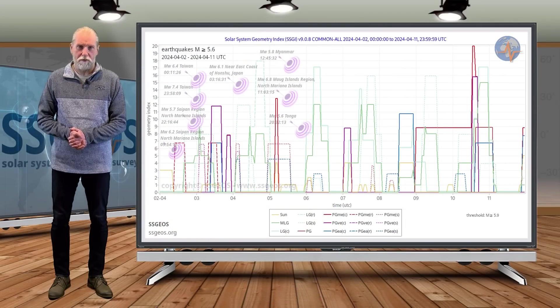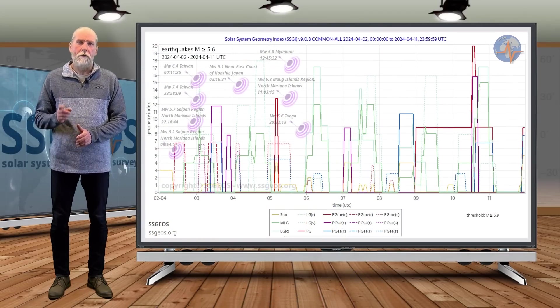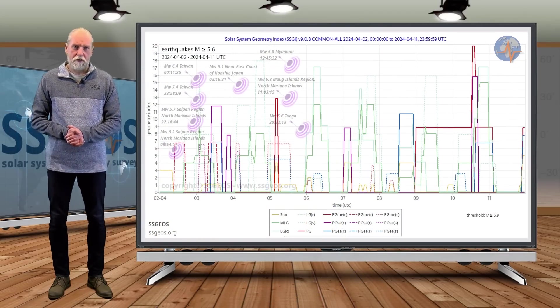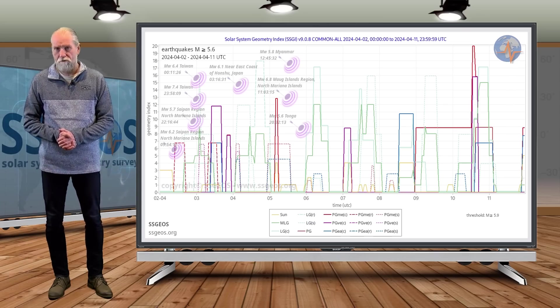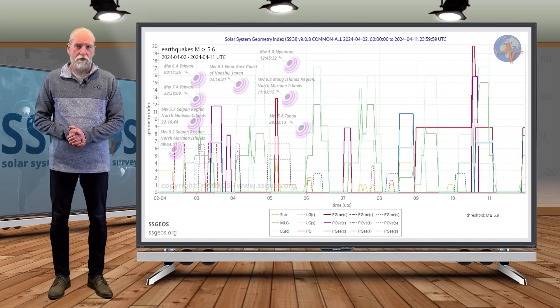Welcome to a new planetary and seismic update. Two updates ago I did a thorough analysis of the right angle geometry that we had on 27 and 28 March, and that this could easily trigger a mid-7 magnitude earthquake.